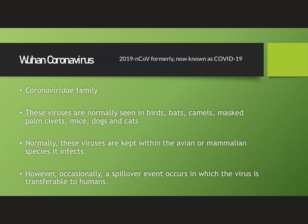The Wuhan coronavirus was previously referred to as 2019-nCoV, however more recently it is now being referred to as COVID-19. This virus is part of the family Coronaviridae. The Coronaviridae family of viruses are normally seen in birds, bats, camels, masked palm civets, mice, dogs, and cats. Normally these viruses are kept within the avian or mammalian species they infect, however occasionally a spillover event occurs and the virus becomes transferable to humans. There are several coronaviruses seen in the human population, though most are either mild or asymptomatic.